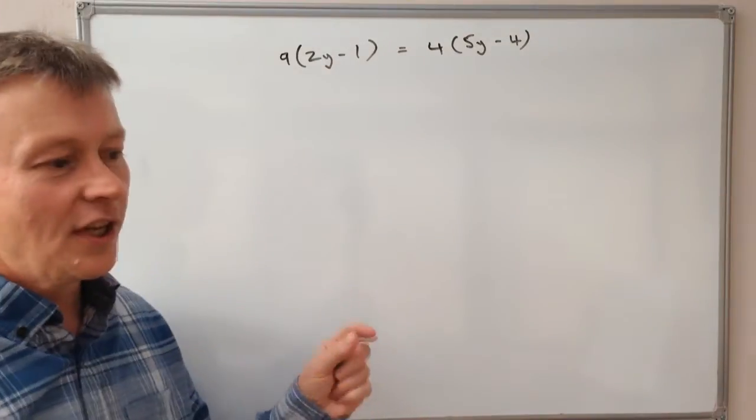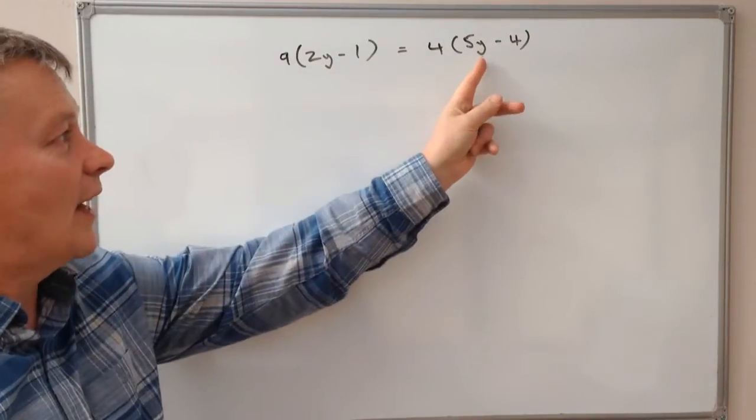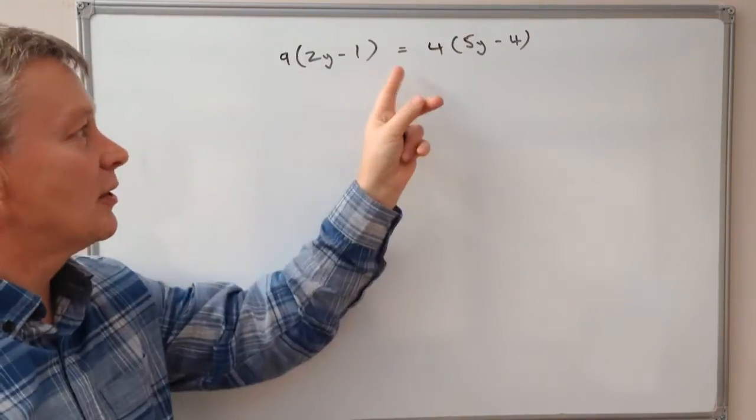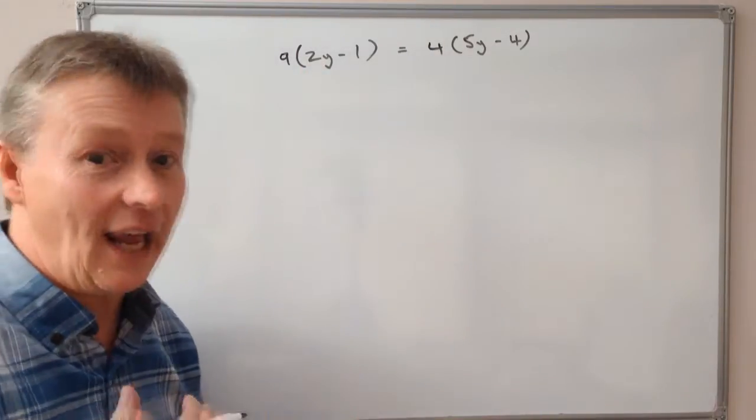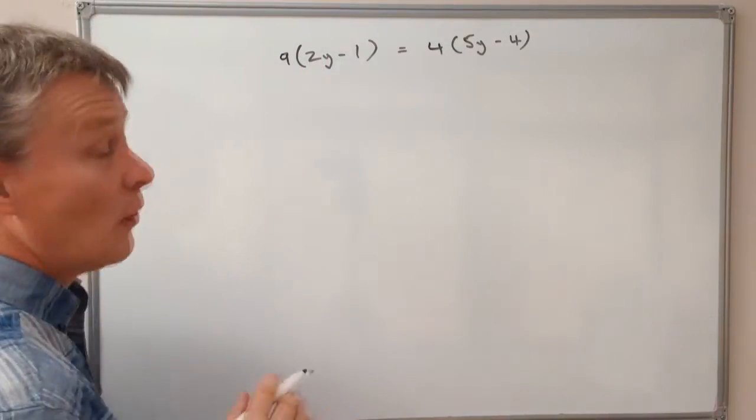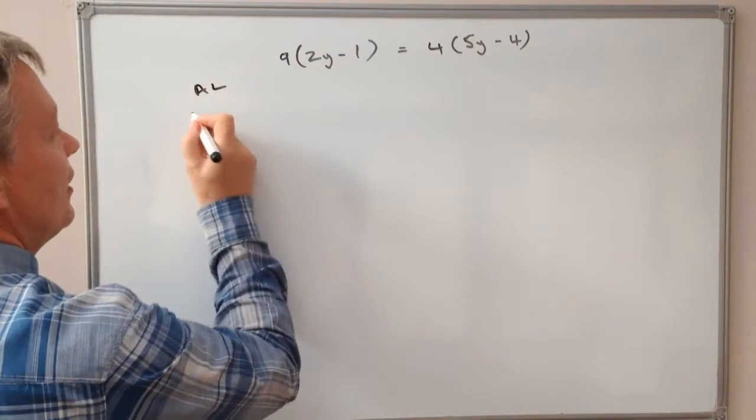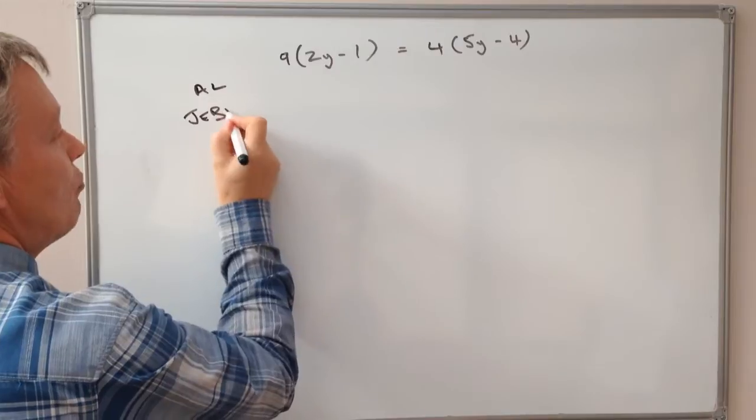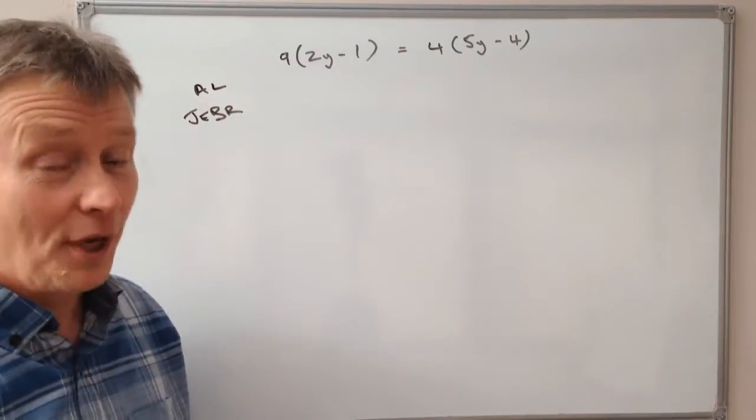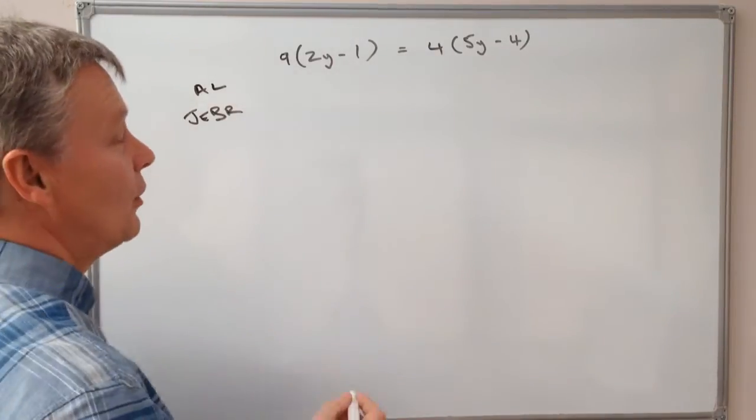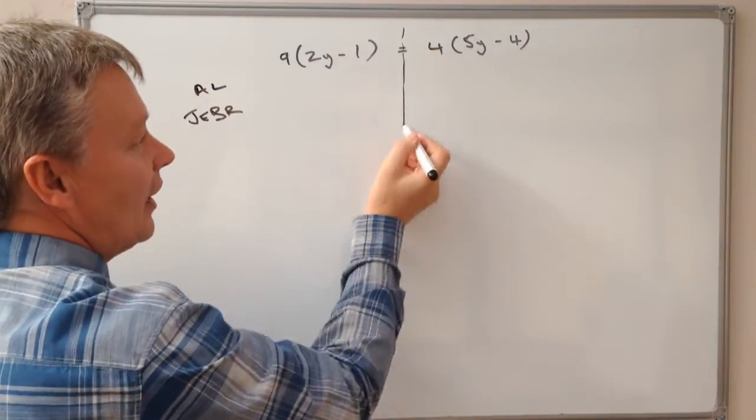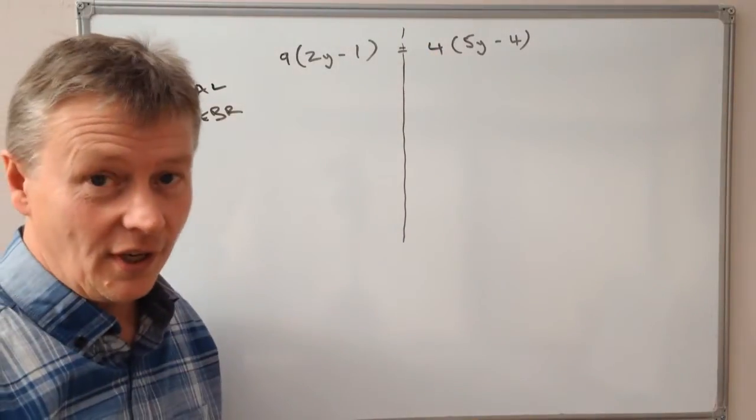What we're going to do is find a value of y to make this equation correct. We're talking about algebra, which originally was al-jabr, meaning imbalance. We're going to work down the page around the equal sign.